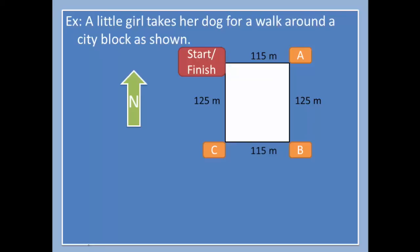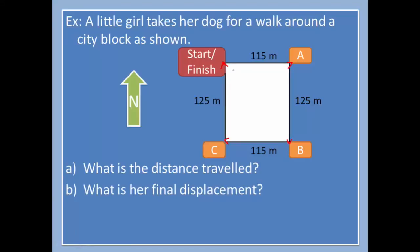Let's take a look at a different example. A little girl takes her dog for a walk around the city block as shown. You'll notice how she starts here, travels there, and there, and there. All of these vectors add up to a nice pretty square. What is the distance traveled? The distance traveled is simply however much walking was done. We're going to add up all of these distances, you should get 480 meters. For part B, what's her final displacement? We started at the start, went around in a square, and ended up at the finish. This is super easy. It's zero meters. Why? Because she went all the way around. If you end up where you started from, then your total displacement is zero.